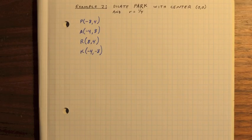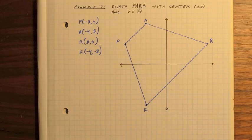Let's try another example. Here we want to dilate PARK with a center of 0, 0, and a scale factor of 1 fourth. In this case, we'll have a reduction, not an enlargement. So first, graph the pre-image.